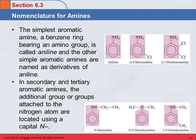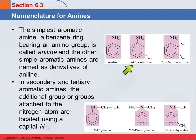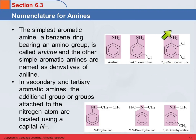Then we have the aromatic amines. The simplest one is a benzene ring with an amino group on it — that has the special name aniline. The other simple aromatic amines are named as derivatives of aniline. Here we have the common name meta-chloroaniline, where the chlorine is in the meta position to the amino group. Using the numbering system, the amino group gets number one, making this 2,3-dichloroaniline.